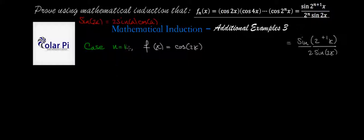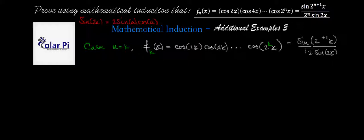So when n is equal to k, we'll have f sub k of x, and it will equal cosine 2x times cosine 4x times cosine 8x times cosine 16x, all the way to cosine of 2 to the k times x. And we know that the product of these gives us sine of 2 to the k plus 1 times x, divided by 2 to the k times sine of 2x. This is what we assume to be true in the inductive step, and we need to make use of it in our next and final step.